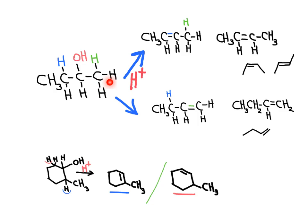The dehydration of asymmetric alcohols can produce more than one product. In this case, we will always lose the OH from the alcohol and one hydrogen from one of the neighboring carbons. In the first case, we are keeping the hydrogen from the primary carbon and losing the hydrogen from a secondary carbon, forming a carbon-carbon double bond between carbon number 2 and 3. In the second case, we are losing the hydrogen from a primary carbon, forming a carbon-carbon double bond between carbon number 1 and 2.